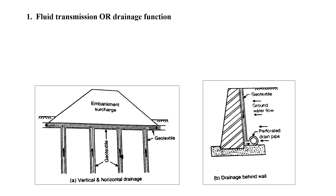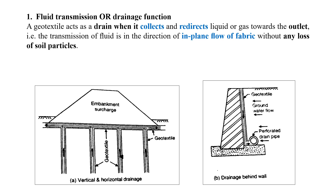The first function is fluid transmission or drainage. A geotextile acts as a drain when it collects and redirects liquid or gas towards the outlet. The transmission of fluid is in the direction of in-plane flow of fabric without any loss of soil particles. You can see these two figures showing vertical and horizontal drainage.